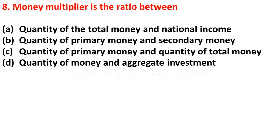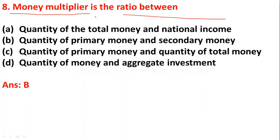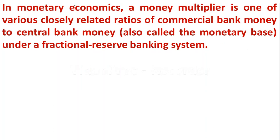The next question: money multiplier is the ratio between — Option A: quantity of total money and national income; Option B: quantity of primary money and secondary money; Option C: quantity of primary money and quantity of total money; Option D: quantity of money and aggregate investment. Money multiplier is the ratio of primary money to secondary money — it is one of the various closely related ratios of commercial bank money to central bank money.